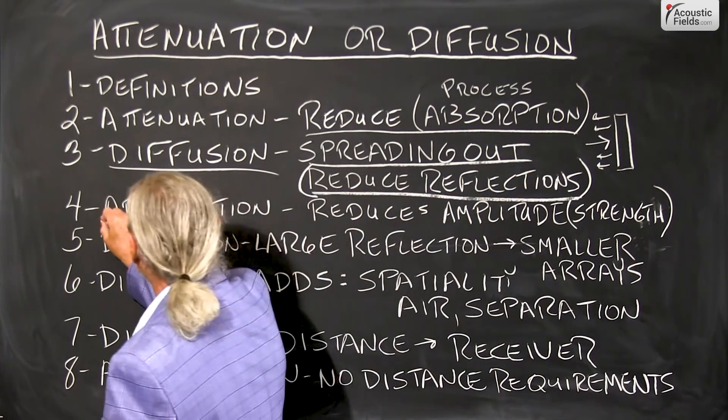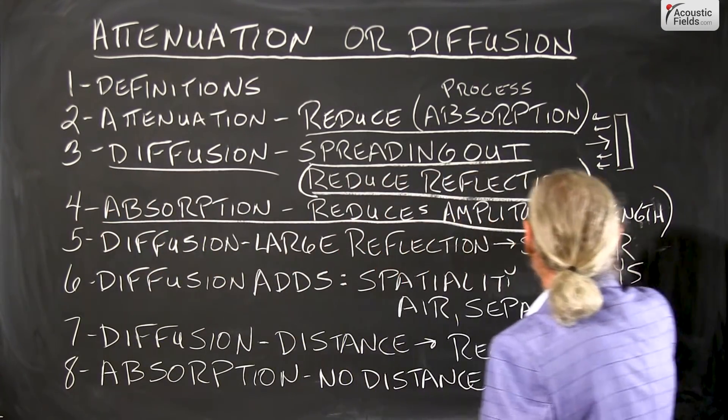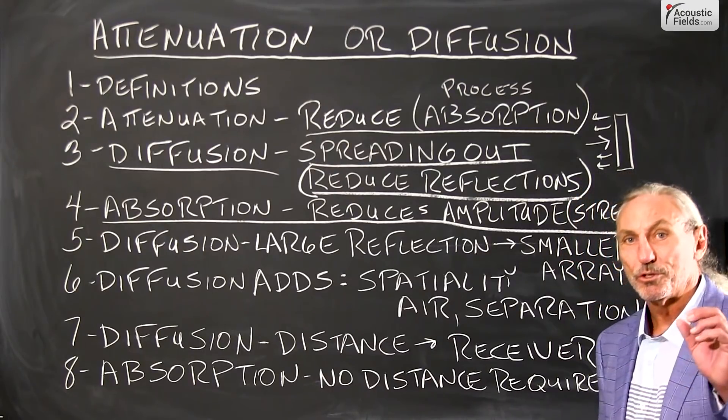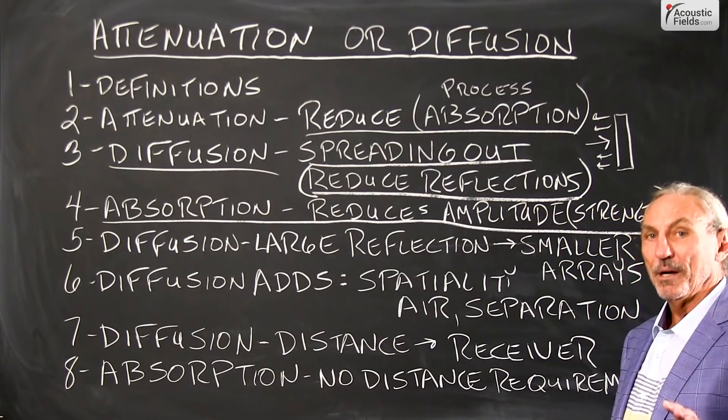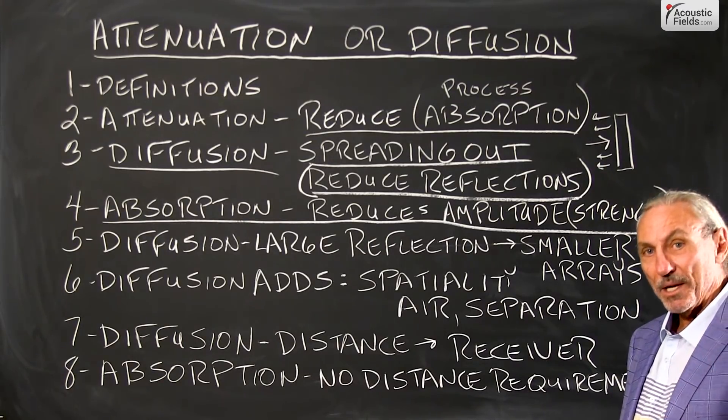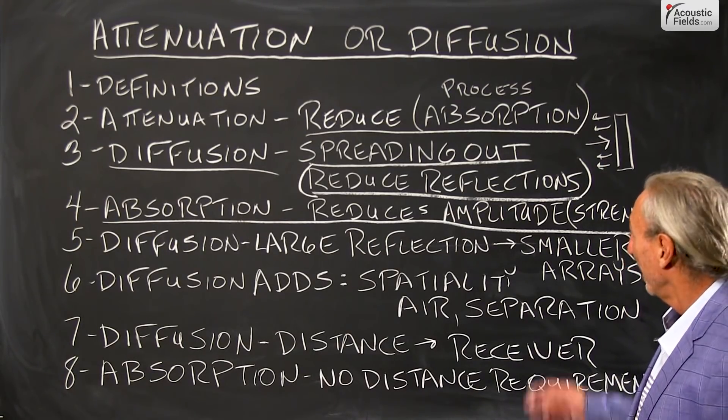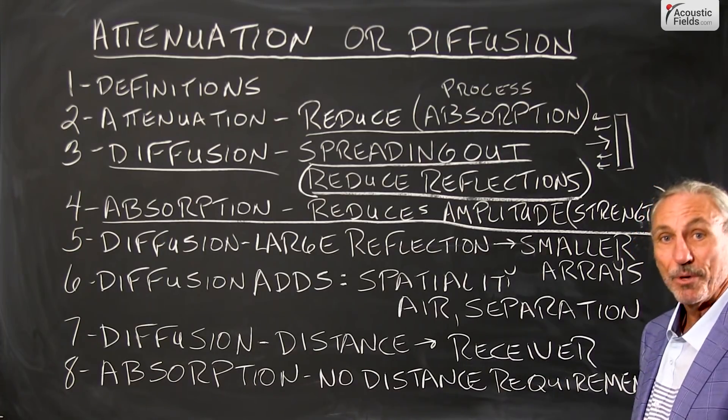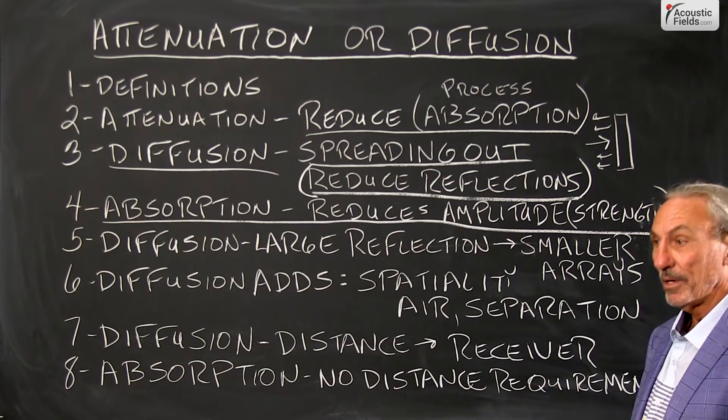So absorption is a process that we use to reduce the amplitude or the strength of the energy. How do we do that? Well, we convert it to heat through friction and through friction then we have an energy transformation and we have reductions.